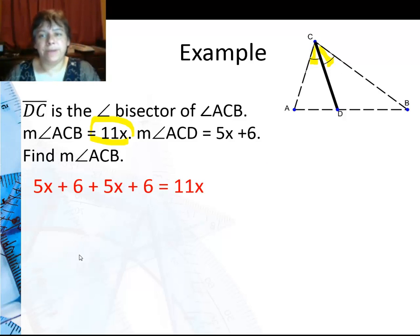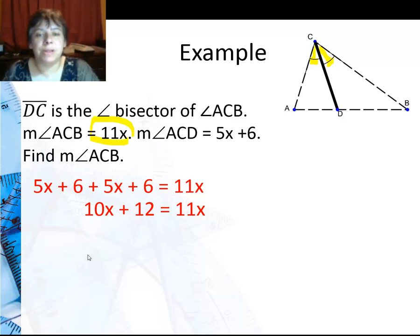So I say 5x plus 6 plus 5x plus 6 equals 11x. I could have said two times in parentheses 5x plus 6 as well. Combining like terms, I get 10x plus 12 equals 11x. Subtracting 10x from both sides gives me 12 equals x.